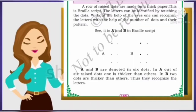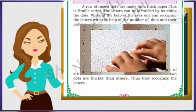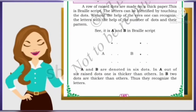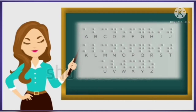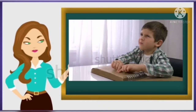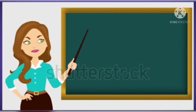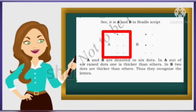A row of raised dots are made on a thick paper. The letters can be identified by touching the dots without the help of the eyes. One can recognize the letters with the help of the number of dots and their patterns.